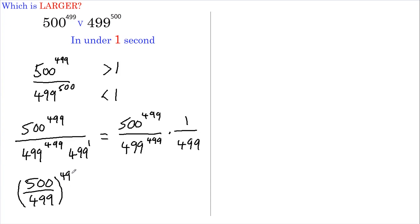This now becomes 500 divided by 499, all to the power of 499, and we still have 1 over 499 here. This can then be rewritten as 1 plus 1 over 499, all to the power of 499, multiplied by 1 over 499.